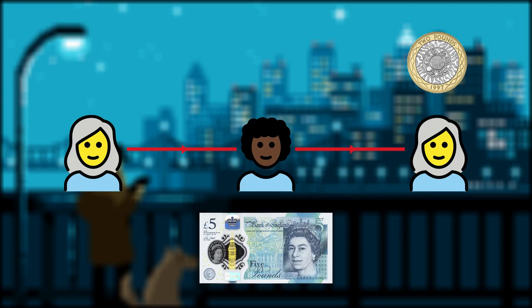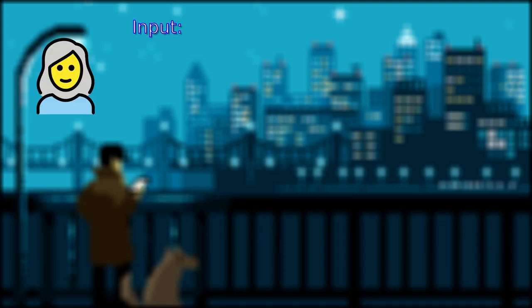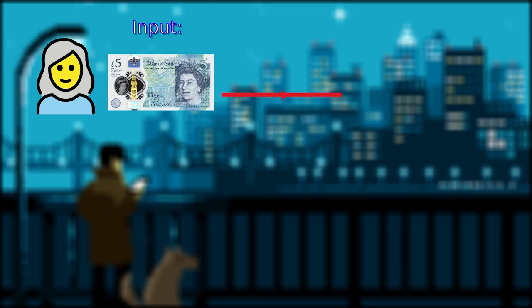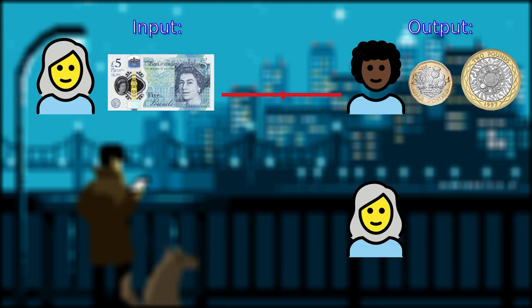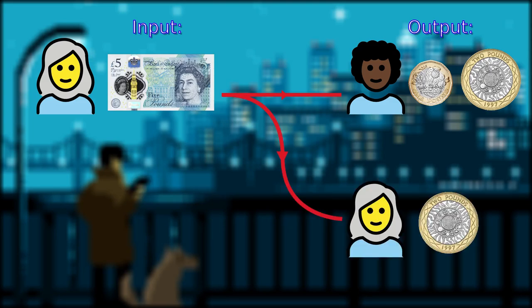So what would this transaction look like in the lens of a Bitcoin transaction? On the input side, Alice takes her £5 note and sends the cashier £3 as the output, as well as sending herself back £2 as change.